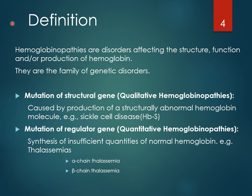Hemoglobinopathies are a family of genetic disorders affecting the structure, function, and/or production of hemoglobin. They are broadly classified into qualitative hemoglobinopathies and quantitative hemoglobinopathies. In qualitative hemoglobinopathies, there is a mutation of a structural gene resulting in the production of a structurally abnormal hemoglobin molecule — for example, sickle cell disease or hemoglobin S disease.